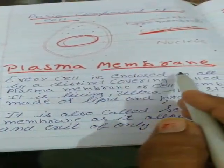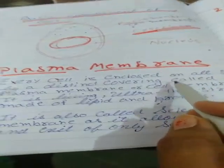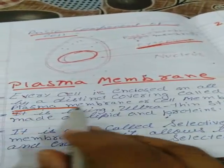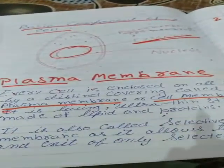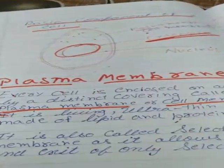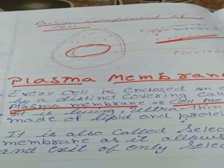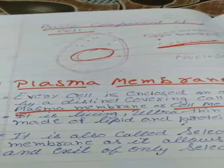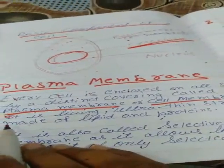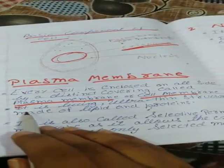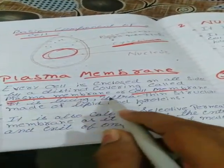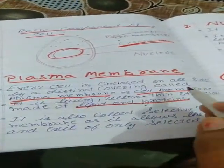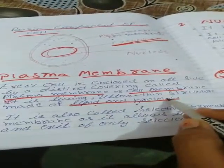Let us discuss the plasma membrane, also called the cell membrane. Every cell is enclosed on all sides by a distinct covering called the plasma membrane or the cell membrane. Either the cell is very small or very large, it is always covered with a plasma membrane. The plasma membrane is a living ultra-thin structure made up of lipid and protein.